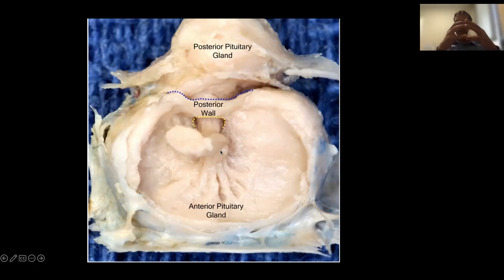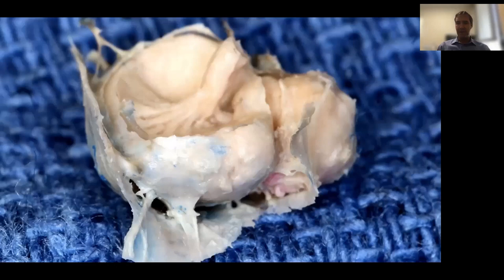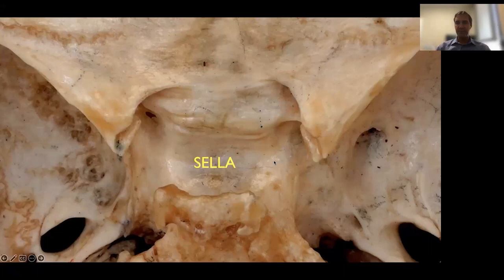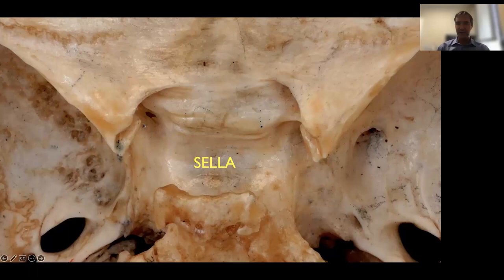They both form the infundibulum or the pituitary stalk that connects superiorly with the hypothalamus. The pituitary gland sits on the sella. The sella is a cavity of bone on the sphenoid. This is the sphenoid bone seen from above. You see the lesser wing of the sphenoid, the anterior clinoid process, the sella itself, the tuberculum sella, and the dorsum sella, which has the posterior clinoids on each side. These are the boundaries of the sella and the pituitary gland.